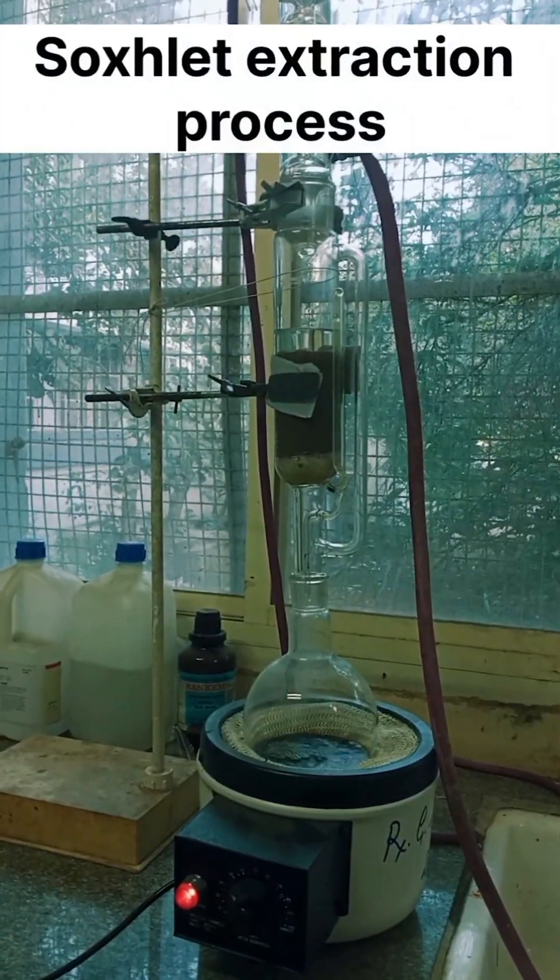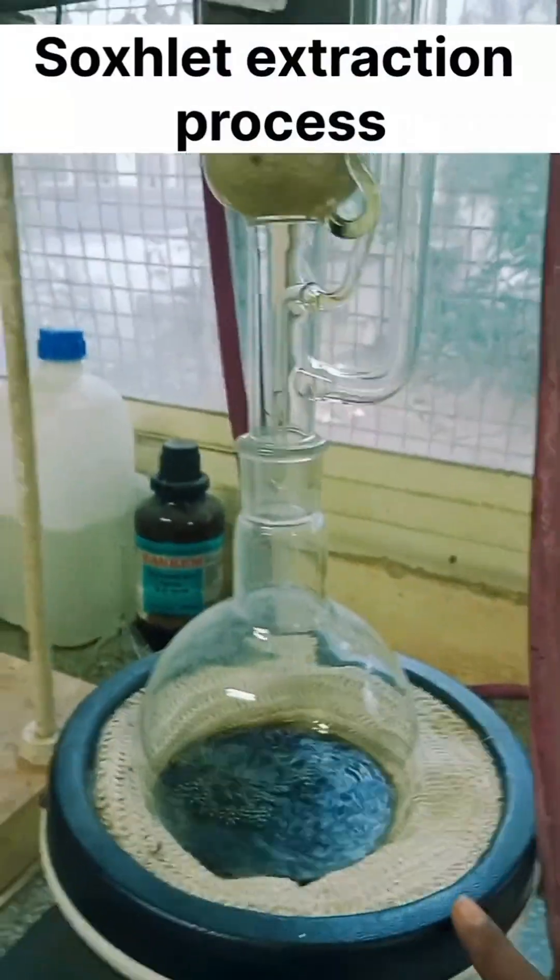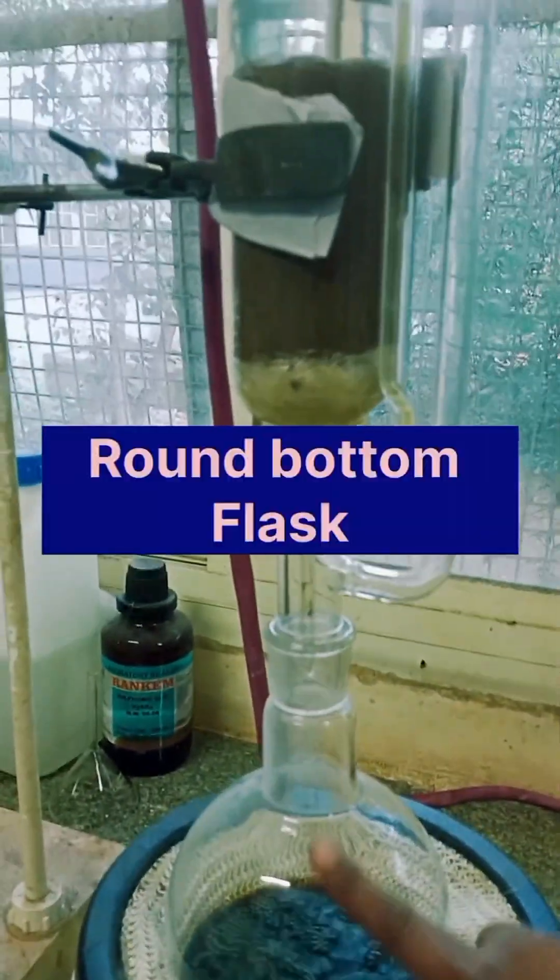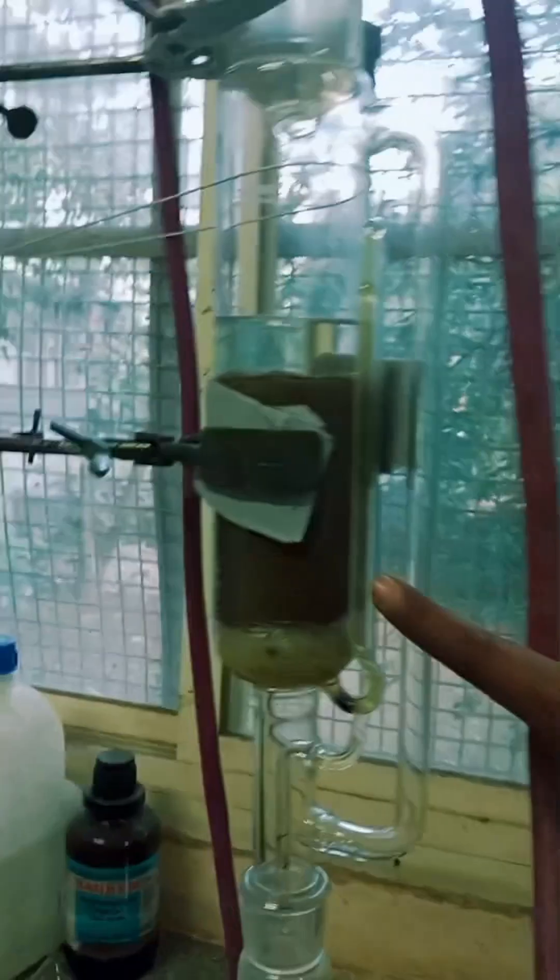Hello guys, let's understand the whole Soxhlet extraction process. This is the heating mantle which is used for heating of the solvent. This is the round bottom flask. The round bottom flask is connected with the Soxhlet extraction chamber.